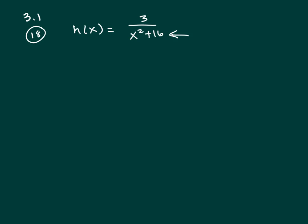There's no way you can make this denominator 0. For example, if you let x be negative 4, that's negative 4 squared plus 16, and that gives you 16 plus 16, which is 32, and there's no problem with 32 in the bottom.